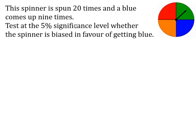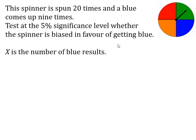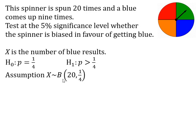We're going to look at a similar example now. Same spinner, spun 20 times — blue came up nine times. We might want to test whether the spinner is biased in favour of getting blue. Our variable is the number of blue results. The null hypothesis assumes the probability of getting blue is a quarter. The alternative, if the spinner is biased in favour of blue, is that the probability of getting blue is greater than a quarter. Assuming H₀ is true, x follows a binomial distribution with n = 20 and p = one quarter.